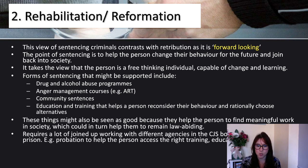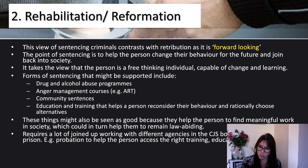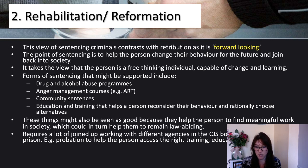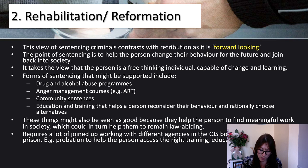Rehabilitation requires a lot of joined-up work from different agencies in the criminal justice system, both inside and outside prison. For example, probation helps the person access the right training, education and therapy — but you not only need the probation officer, you then need the training, the education, the therapy, all of these people need to be set up and organised, working together, all for the person that has committed the crime.